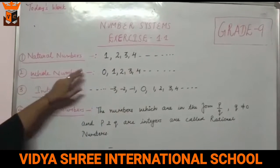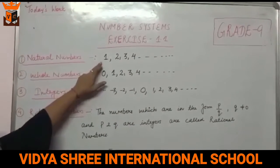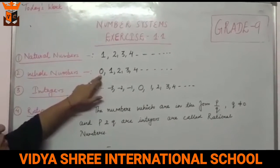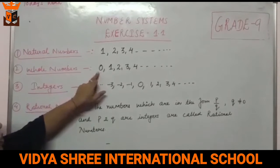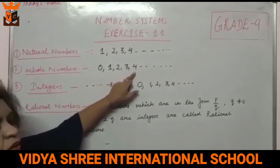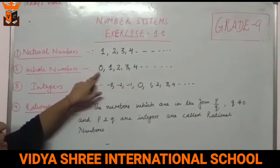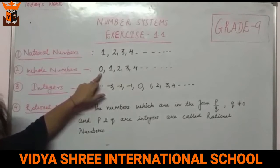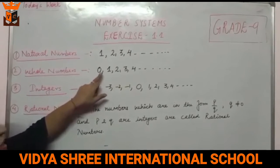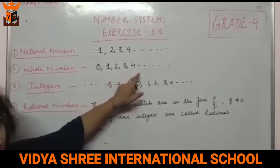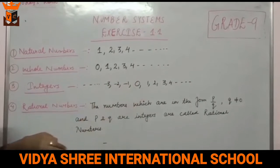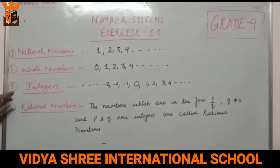Whole numbers — jab natural numbers mein zero add kar lete hai, toh ban jaate hai whole numbers. Whole numbers start kya hoote hai? Zero se. Zero, 1, 2, 3, 4 and so on.